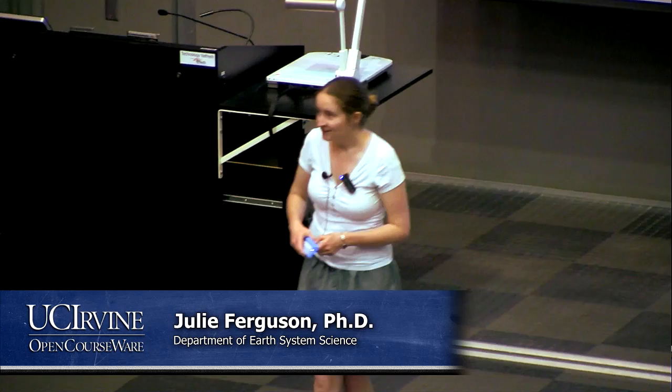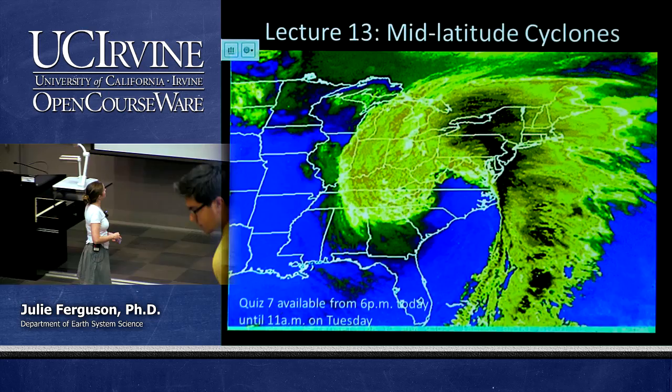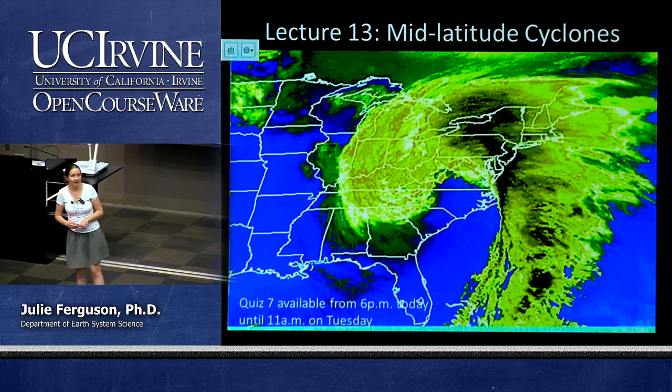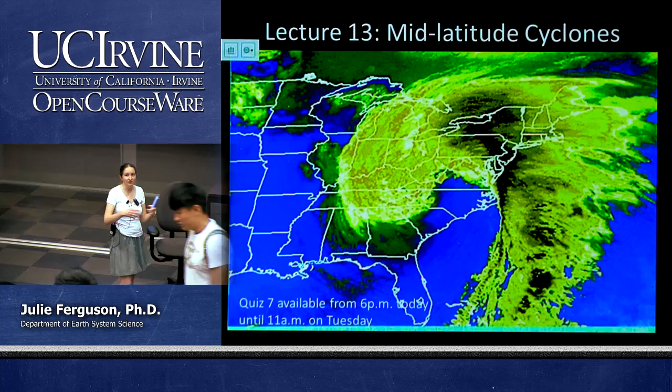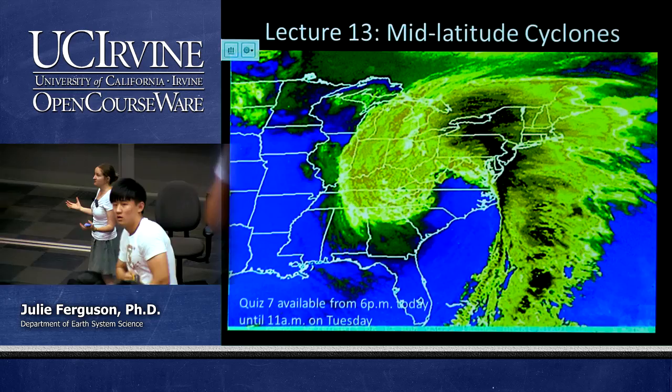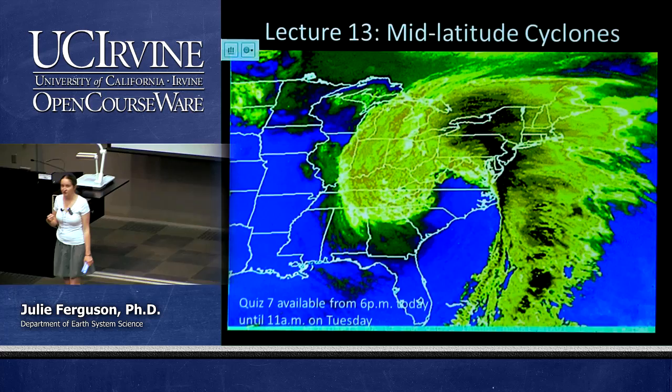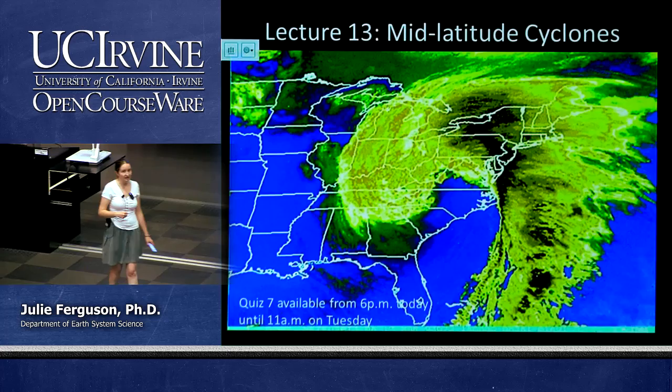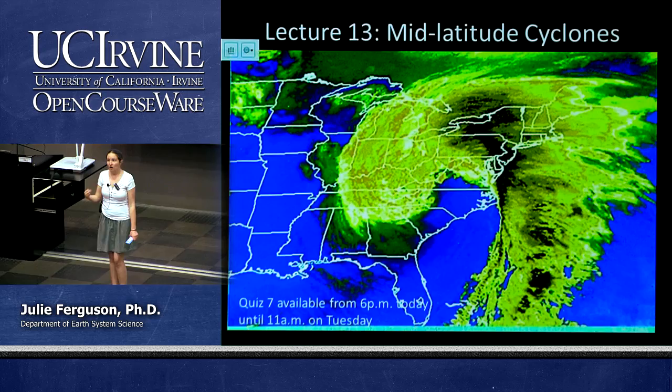Today we're going to do something conceptually a little bit more challenging. We'll take it slow — we don't have huge amounts of content, so I'm very happy to go over this again and again. What we're going to talk about today is mid-latitude cyclones. We're going to remind ourselves what cyclones are, and since most of the US is in the mid-latitudes, these are the big weather systems we encounter during winter storms moving off the Pacific.